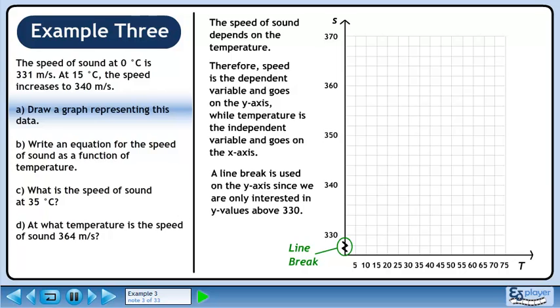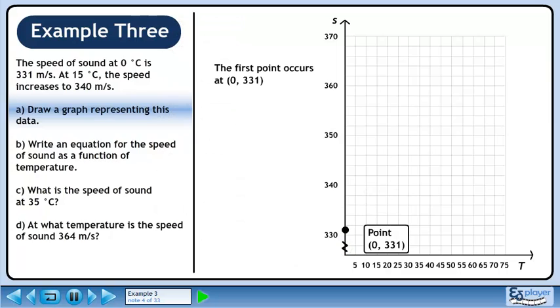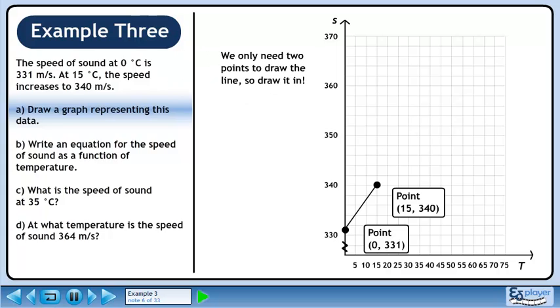A line break is used on the y-axis since we are only interested in y values above 330. The first point occurs at the ordered pair (0, 331). The second point occurs at the ordered pair (15, 340). We only need two points to draw the line, so draw it in.